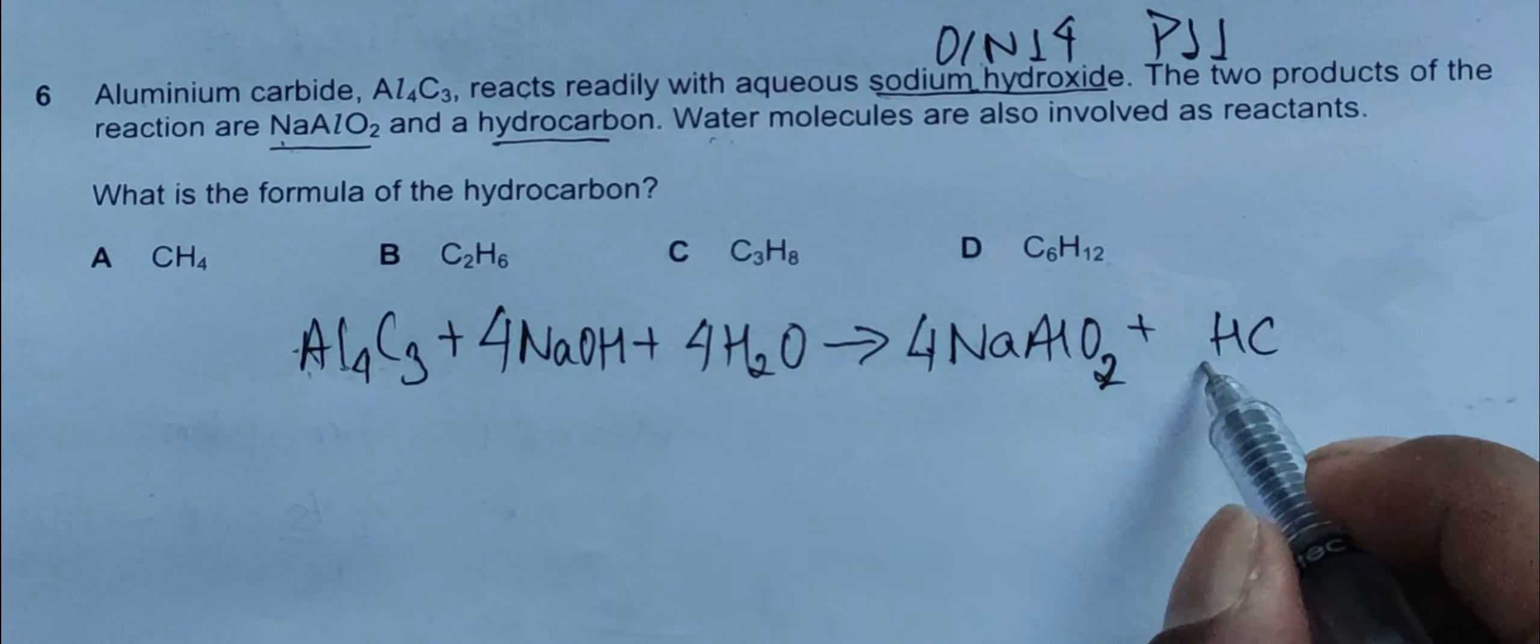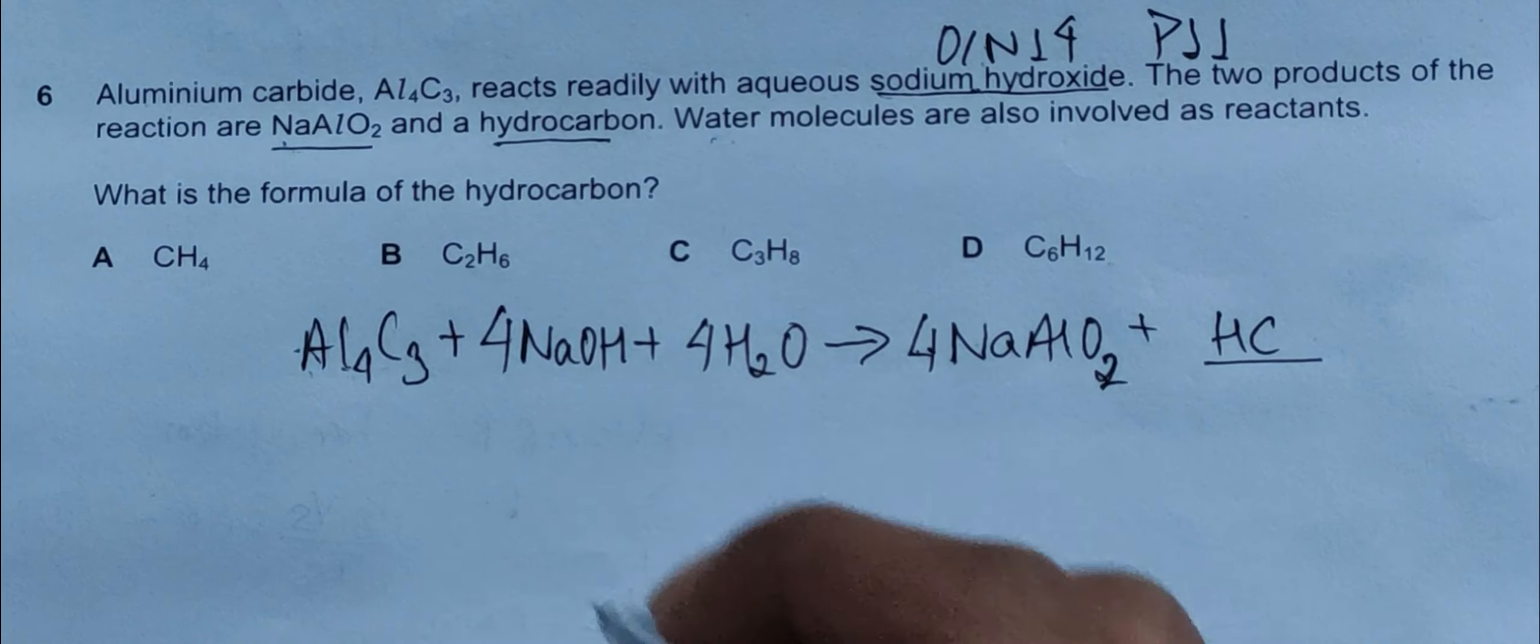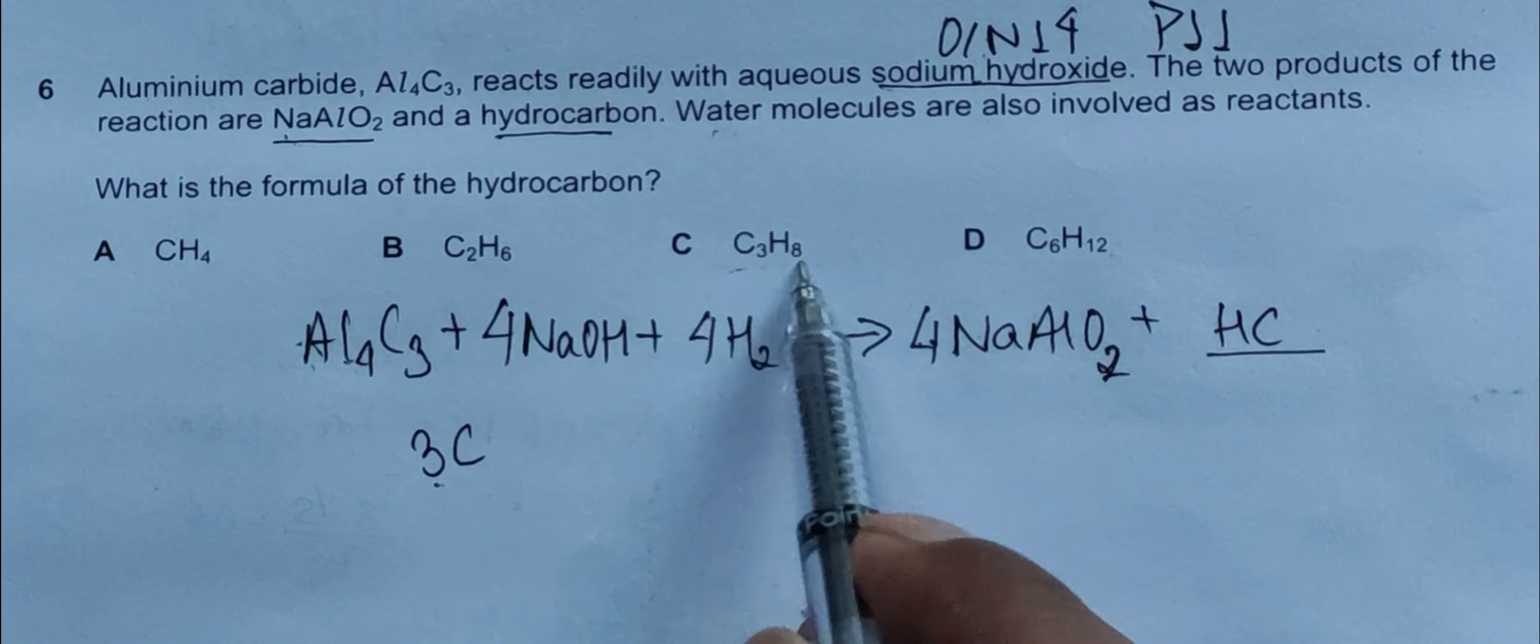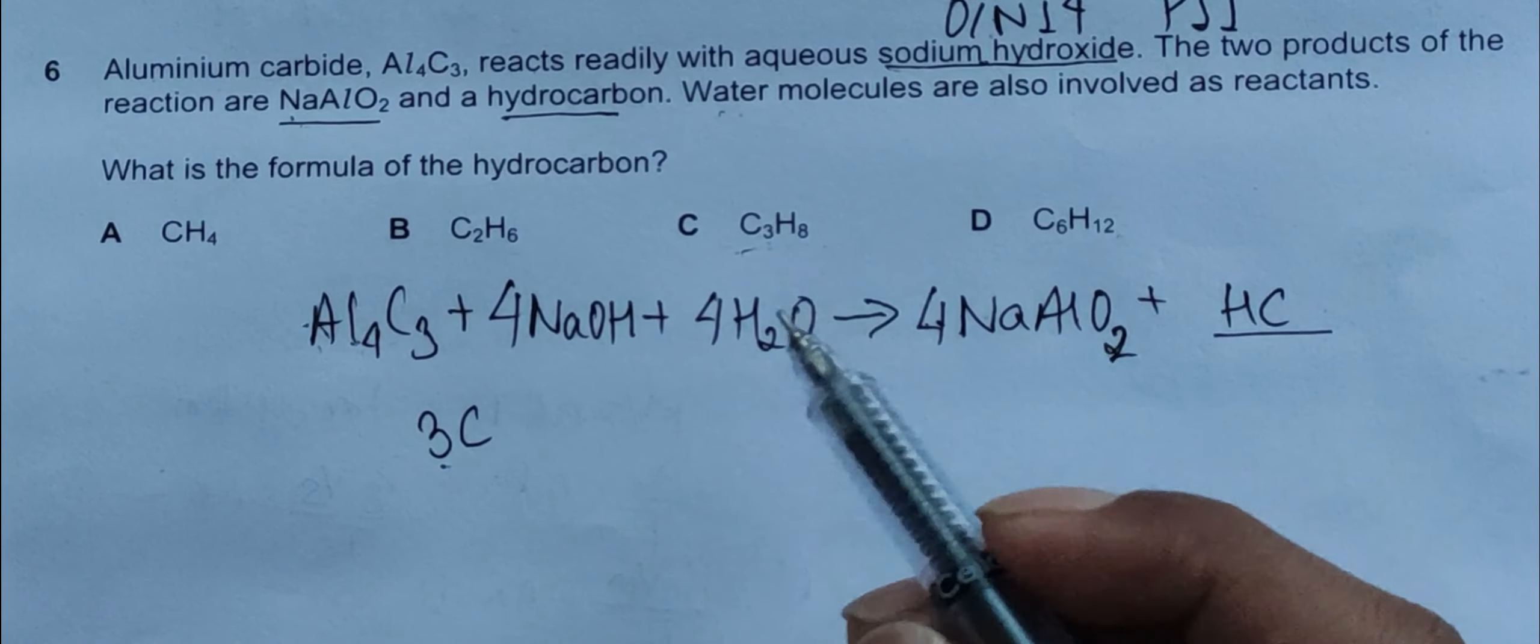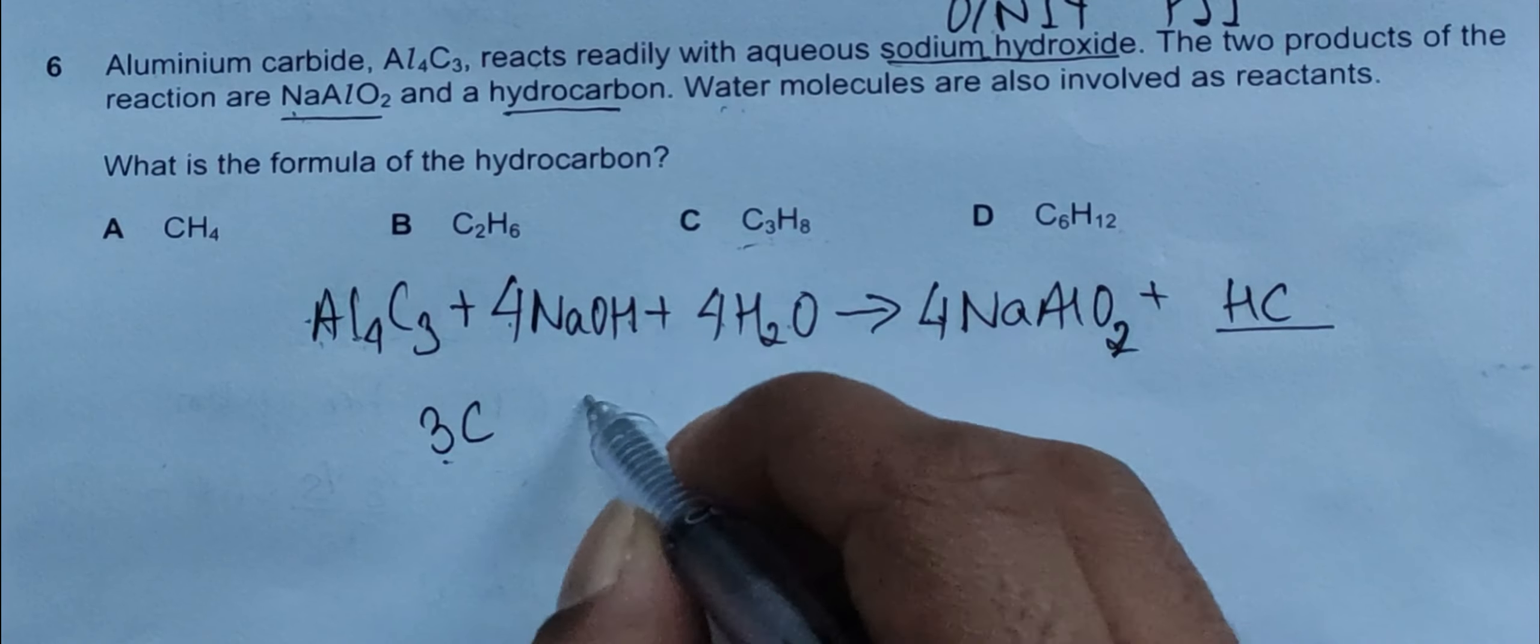Now we need to deduce what this HC is, the hydrocarbon. If we look at what things are remaining, we have three carbon atoms remaining, which means we could see that this could be the answer. But let's dive into full depth. Hydrogen remaining are four from here, eight from here, so twelve hydrogens.